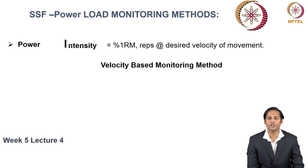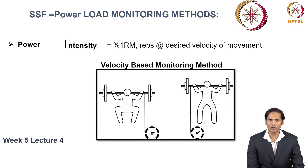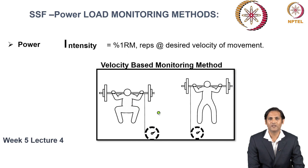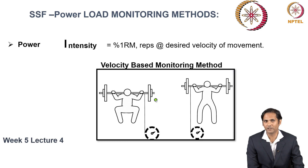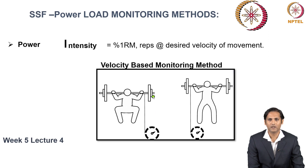In the velocity based monitoring method, the device monitors the velocity of movement using a linear positioning transducer technology or an accelerometer technology. Ultimately, how fast you are moving the object — in this example, a barbell — is recorded in a device called a velocity based device.